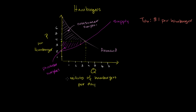When you add the $1 tax, the consumers have to pay $1 more than what the producers receive. If suppliers need $3 to produce 3 million hamburgers, consumers must pay $4. At every point along the curve, the gap is exactly $1. So the supply curve from the consumer's point of view is shifted up $1 relative to the producer's supply curve — and at every point, this distance is $1.